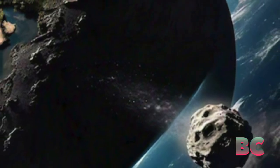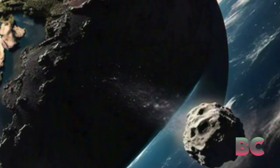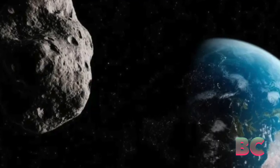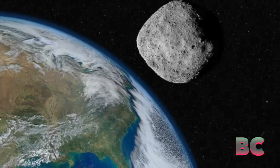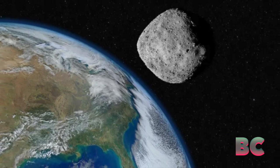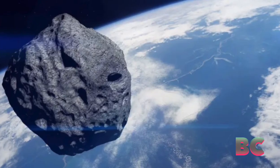NASA's Jet Propulsion Laboratory notes that asteroids like 2024 UQ-1 are remnants from the early solar system, primarily found in the asteroid belt between Mars and Jupiter.